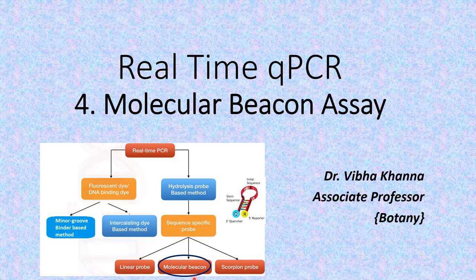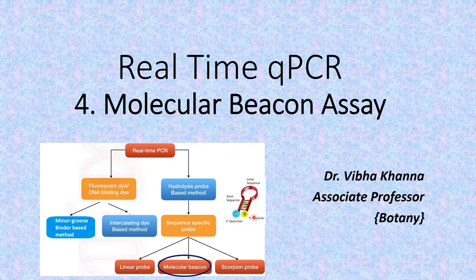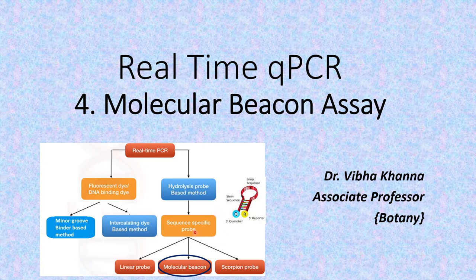The term 'molecular beacon' is used because of the probe that is used — because of the structure and the functioning of the probe used for the purpose. Beacon refers to the guiding light, specially present on top of a hill or a tower. Its structure is like a hairpin loop and it fluoresces, leading us to the sequence of interest, because it is very specific. As we have seen with the linear probe, these assays based on the hydrolysis of the probe are very sequence specific.